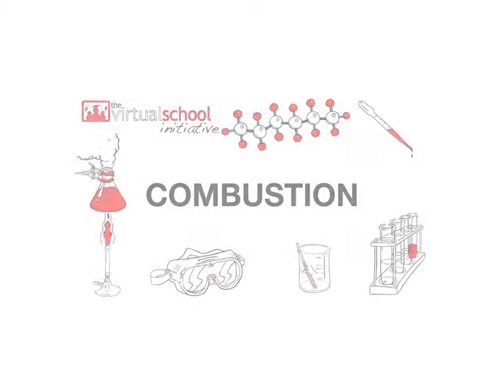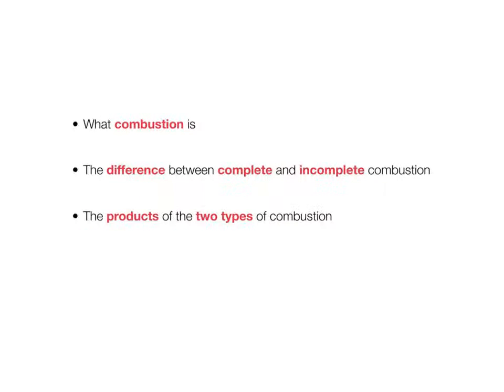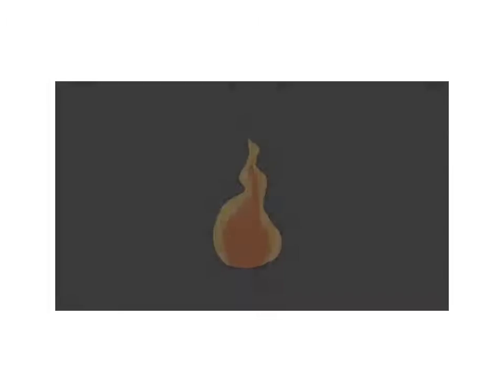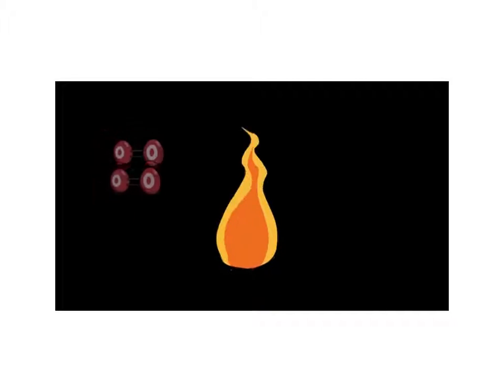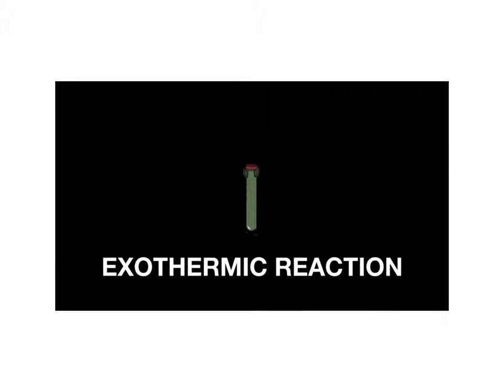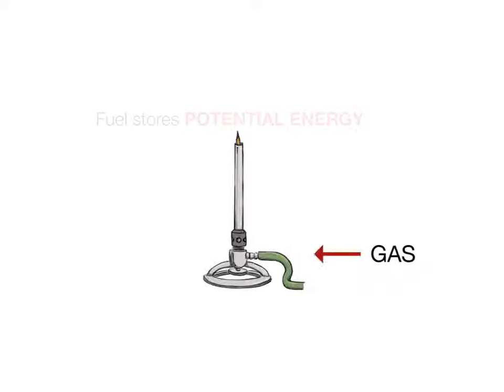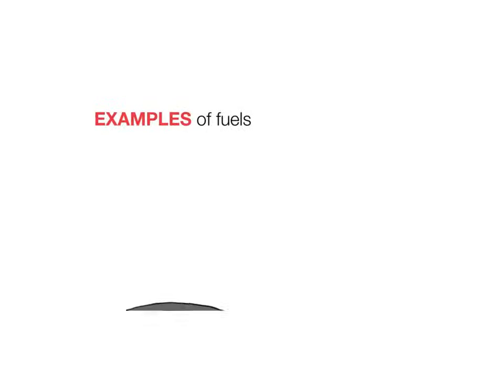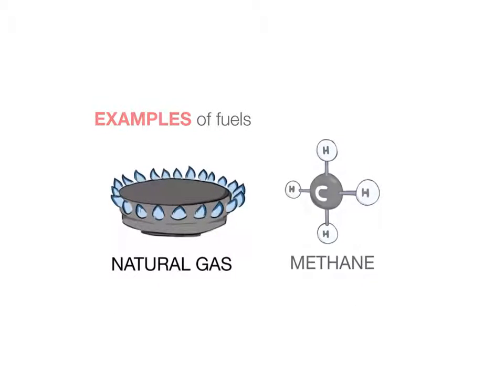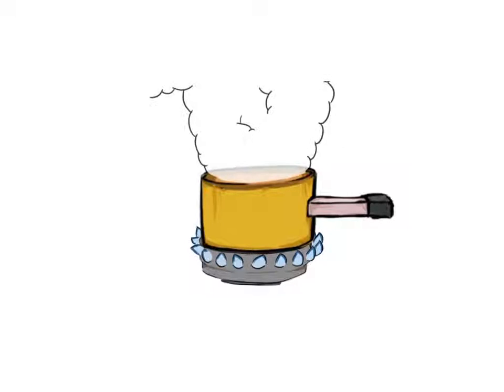Combustion is burning, usually in air which is all around us, or oxygen. It's an exothermic reaction, which means it gives out heat. A fuel stores potential energy that can be released as heat when we burn the fuel. An example of a fuel is natural gas or methane. This is the fuel we burn to heat up our food.